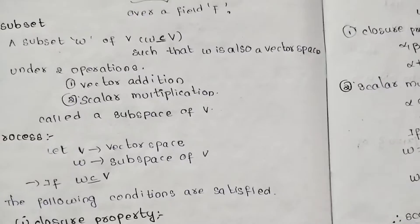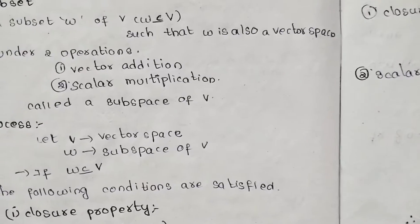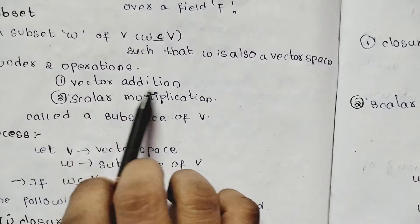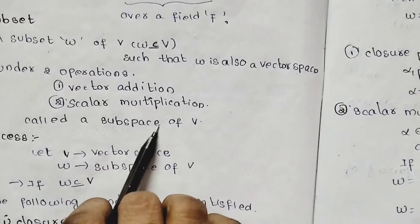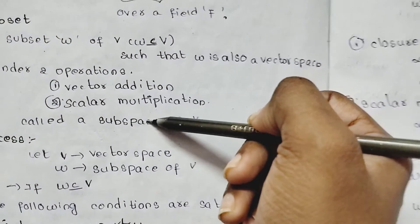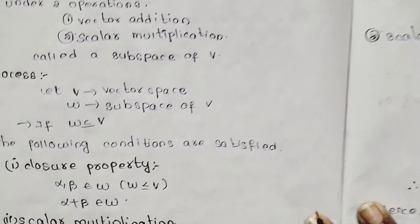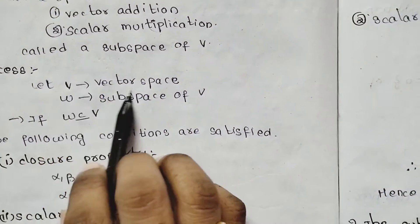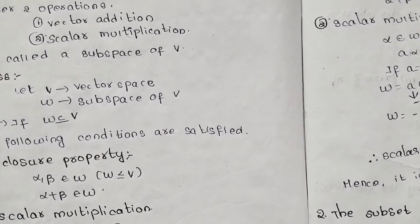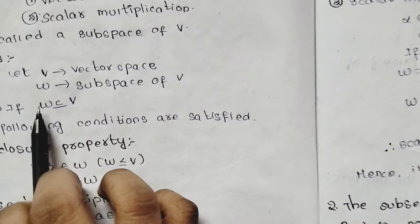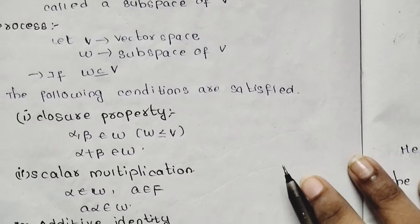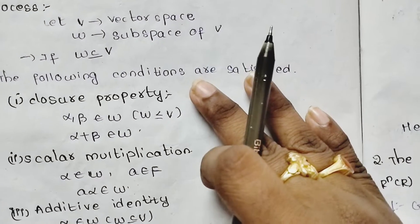Under two operations — vector addition and scalar multiplication — the two operations should be satisfied. W is a subset of V, and if the following conditions are satisfied, we will call it a subspace.